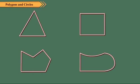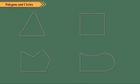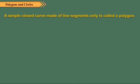Now observe these simple closed curves. We see that curves 1, 2 and 3 are made of line segments only, while curve 4 is made of line segments and curves. We call 1, 2 and 3 as polygons.